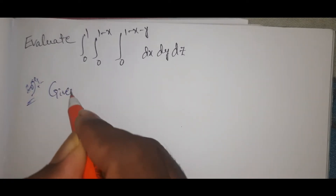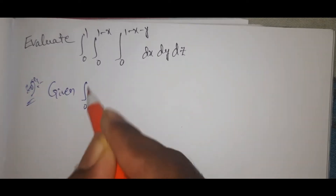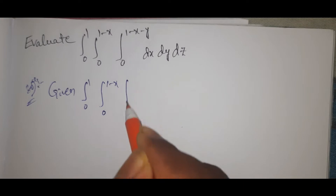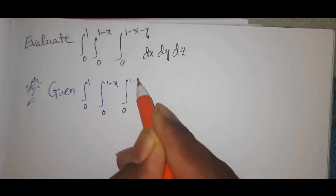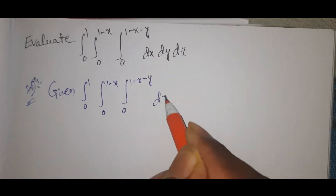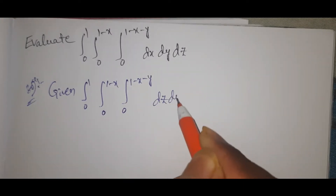Solution: given integral 0 to 1, integral 0 to 1 minus x, integral 0 to 1 minus x minus y, dz dy dx.